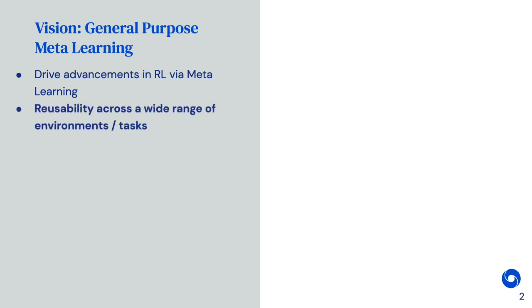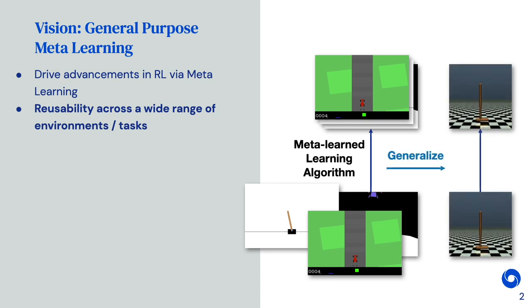Just like human-engineered learning algorithms, the meta-learned algorithms have to be reusable across a wide range of environments or tasks. When training on a collection of environments, the learning algorithm should generalize to a very different environment.